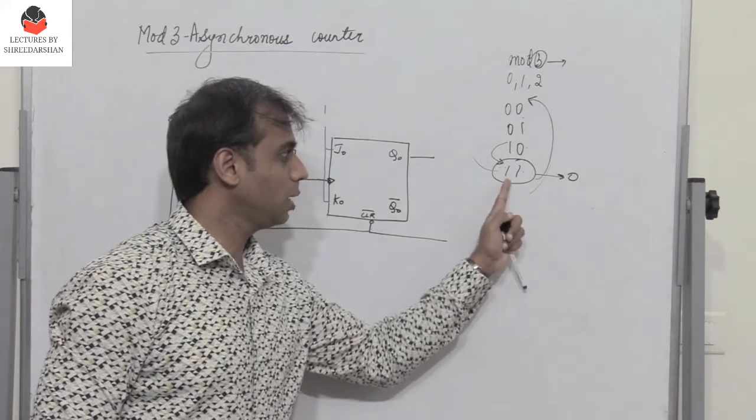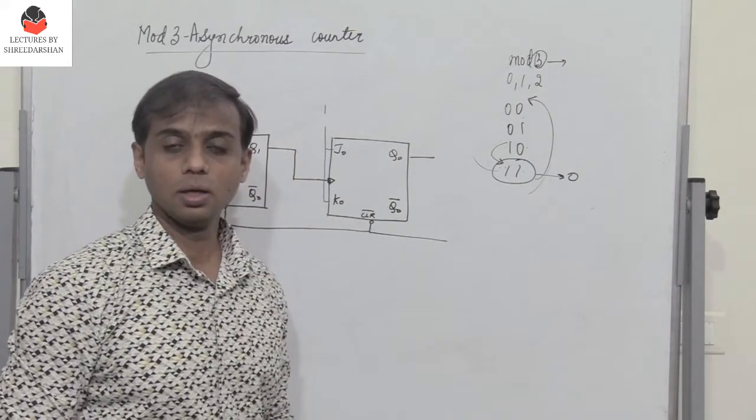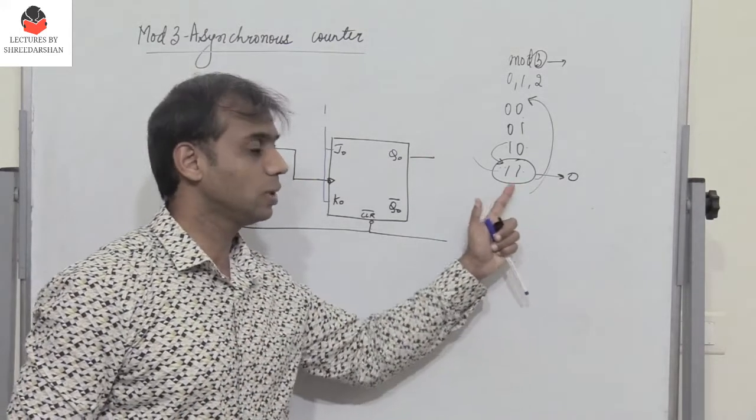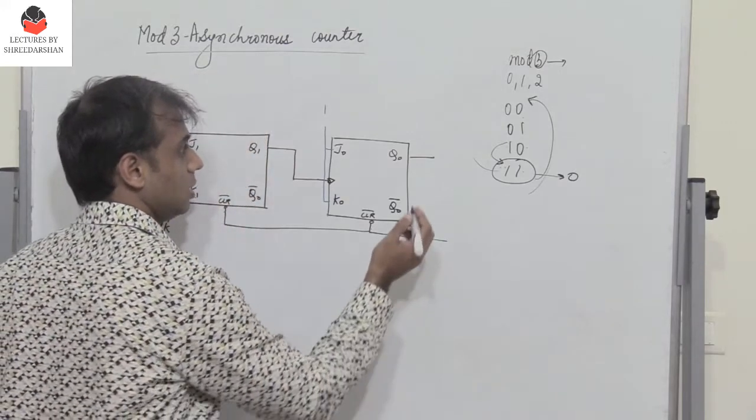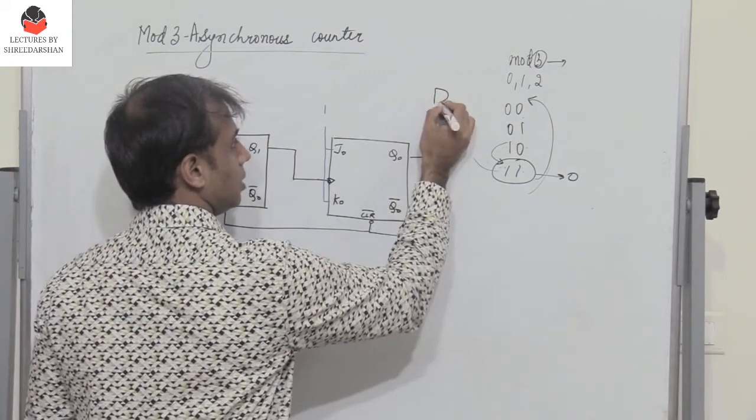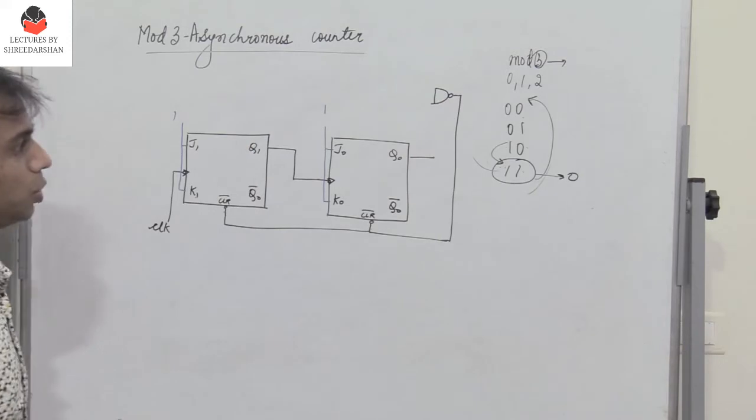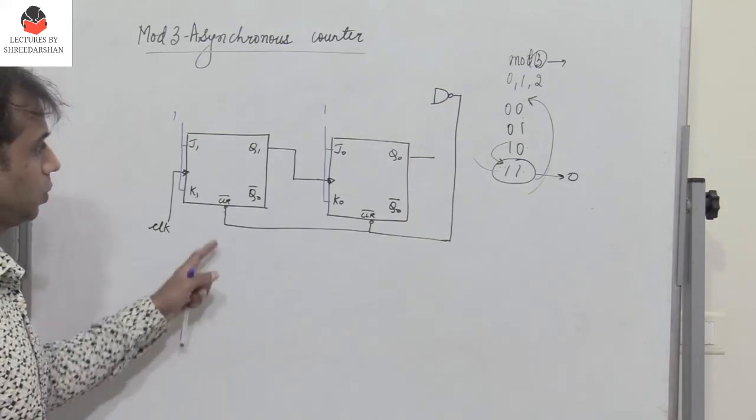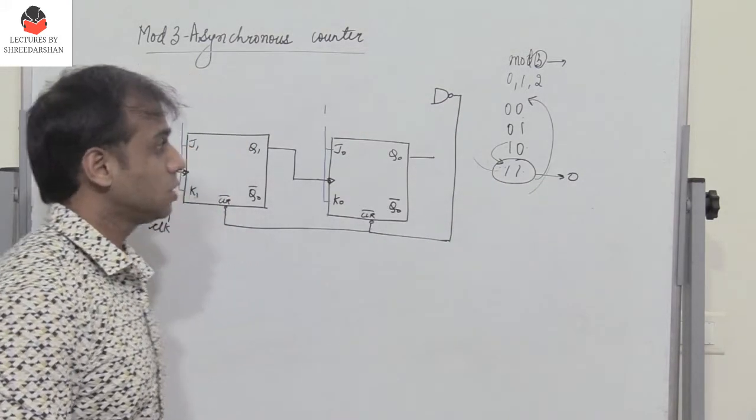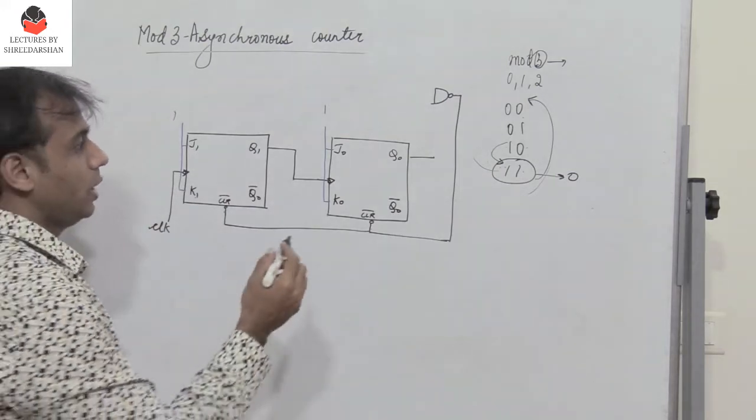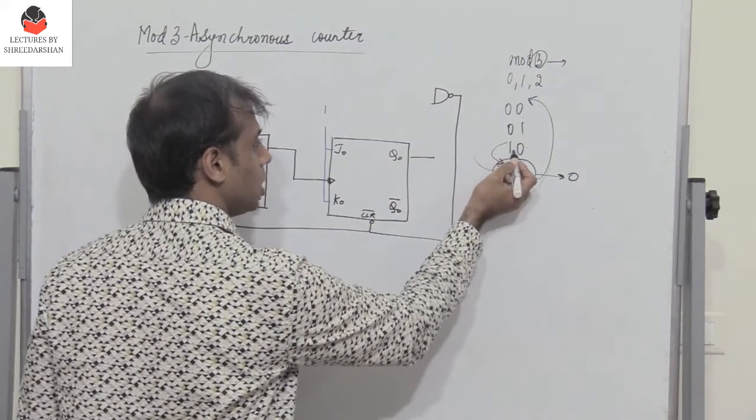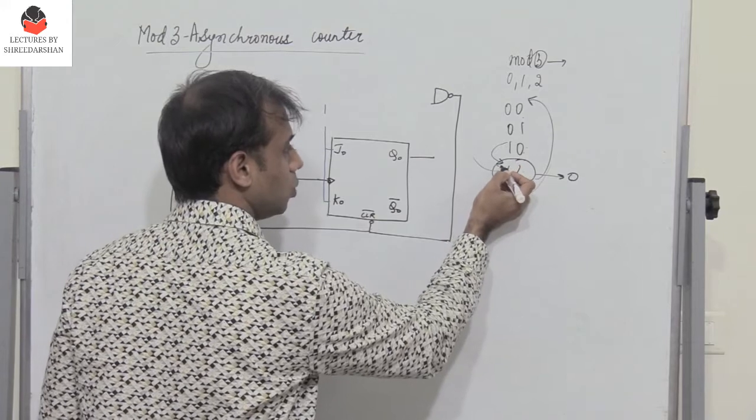The output is 0 when both inputs are 1. Which gate has output 0 when both inputs are 1? It's indeed a NAND gate. When both inputs are 1, the output is 0 when the state changes from 10 to 11.